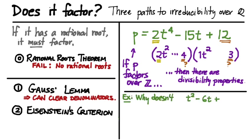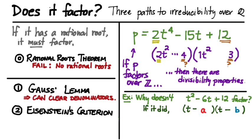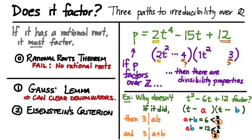Let's look at a quadratic polynomial like t squared minus 6t plus 12. How come that doesn't factor over the integers? Let's suppose it did factor into t minus a times t minus b. Then the sum of a and b has to equal 6, and the product of a and b has to equal 12. Let's think about what that implies in terms of divisibility by looking at the prime factorizations of 6 and 12, and observing that both have a prime in common. Let's focus on the prime 3.